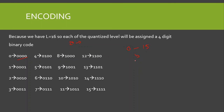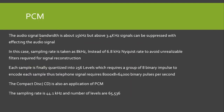By sampling, quantization, and encoding, we are able to convert an analog signal to a digital signal. For example, the audio signal bandwidth is about 15 kHz, but frequency components above 3.4 kHz are very weak and can be suppressed without affecting the audio signal. In this case, the sampling rate is taken as 8 kHz — instead of 6.8 kHz — to avoid unrealizable filters required for signal reconstruction. Each sample is quantized into 256 levels, requiring a group of 8 binary pulses to encode each sample. So this telephone signal requires 8,000 × 8 = 64,000 binary pulses per second.